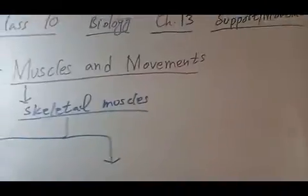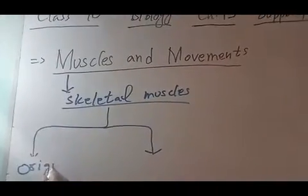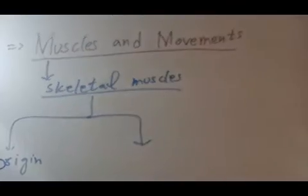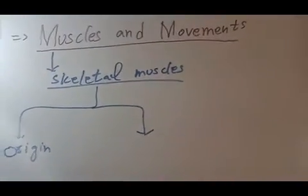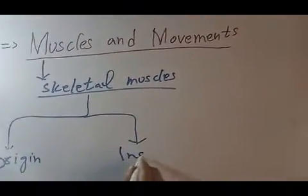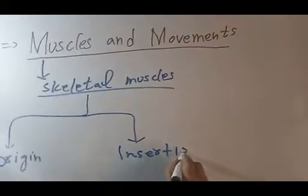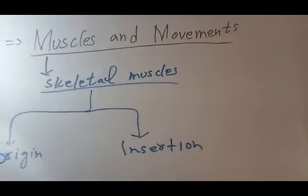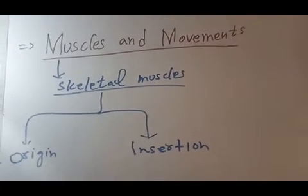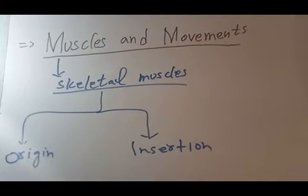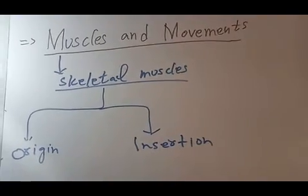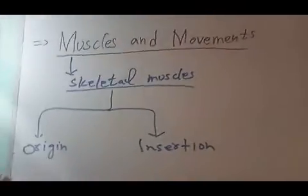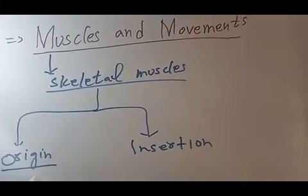Skeletal muscle consists of two ends. One end of the skeletal muscle is called the origin of the skeletal muscle, and the other end is called the insertion. The starting part is the origin and the ending portion of the muscle is the insertion.